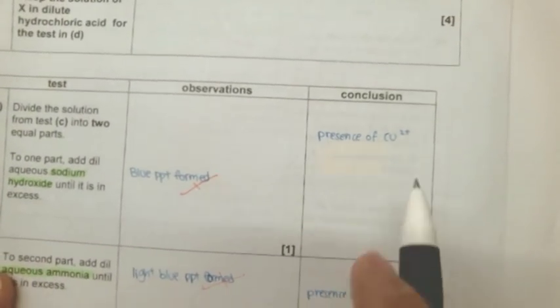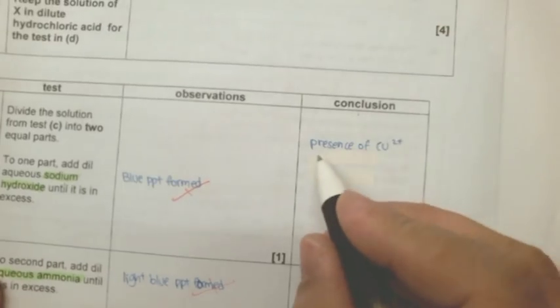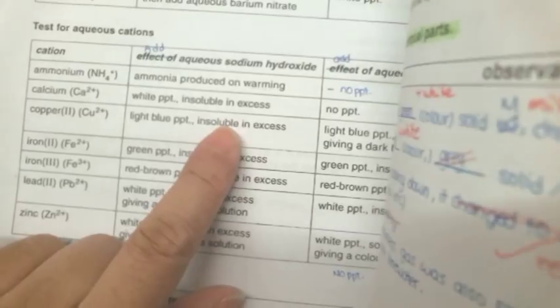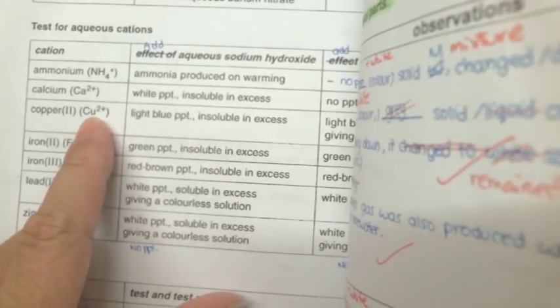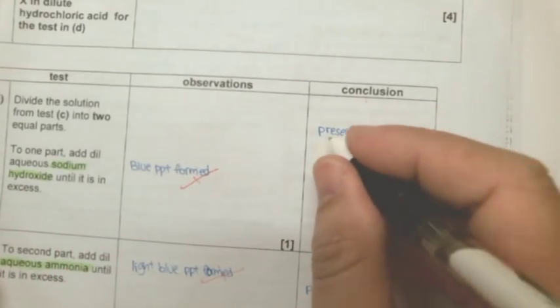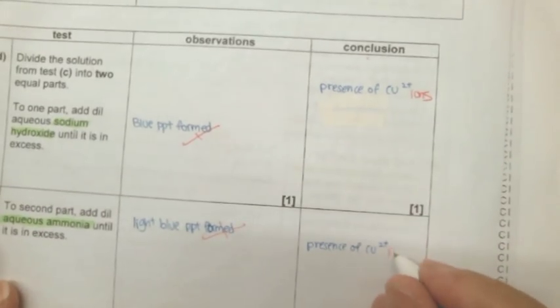In this question they did ask you for conclusion so because of the blue PPT you can confirm that the presence of copper two ions. So once you write a proper sentence like that, this is presence of copper two ions.